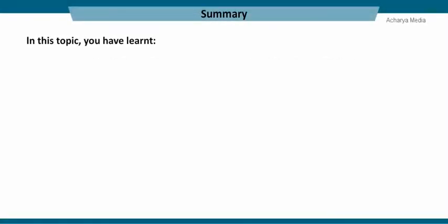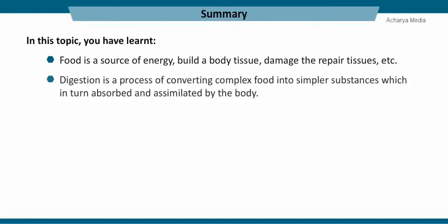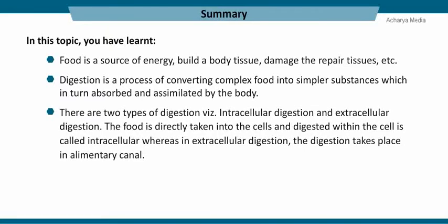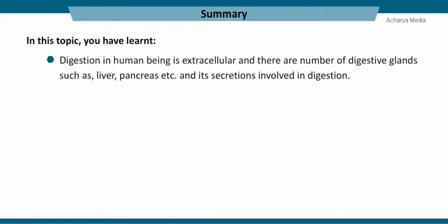In this topic, you have learned: food is a source of energy, helps build body tissue, and repairs damaged tissues. Digestion is a process of converting complex food into simpler substances, which are in turn absorbed and assimilated by the body. There are two types of digestion: intracellular digestion and extracellular digestion. Food that is directly taken into the cells and digested within the cell is called intracellular digestion. In extracellular digestion, the digestion takes place in the alimentary canal. Intracellular digestion is seen in WBC of vertebrate animals, amoeba, paramecium, sponges, and coelenterates. Digestion in human beings is extracellular, and there are a number of digestive glands such as liver, pancreas, etc., whose secretions are involved in digestion.